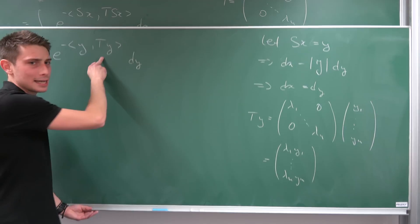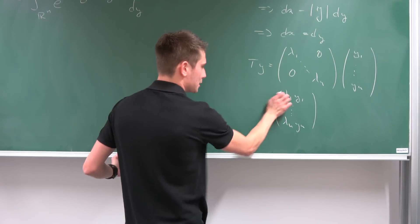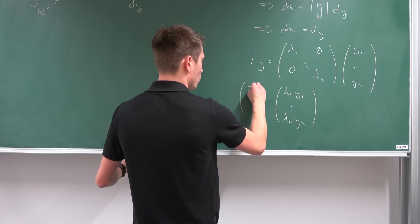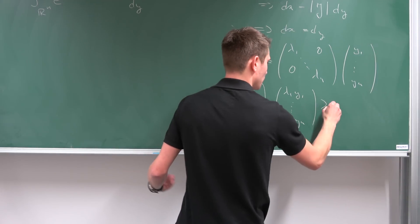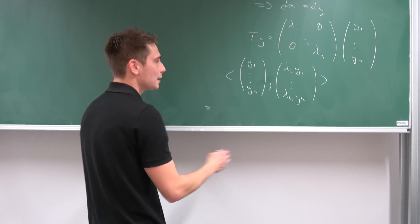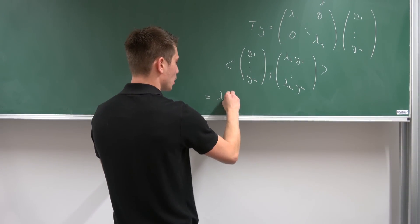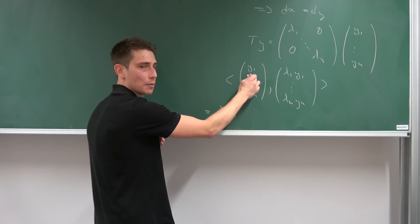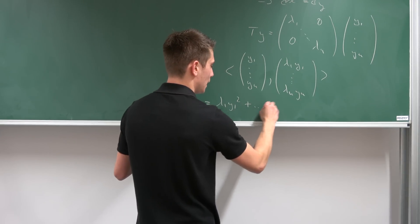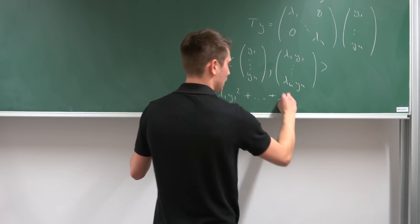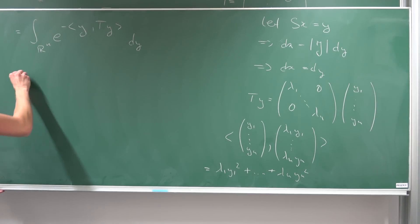And now we can plug this into here and take the inner product of this thing. How does the inner product work? Well, if you take the inner product of y1, yn, we are going to end up with, okay, those multiply together, those first entries, so lambda 1, y1 squared, and add the next ones multiplied together, up until the nth member, lambda n, yn squared. And now we can plug this into here and see what we get.